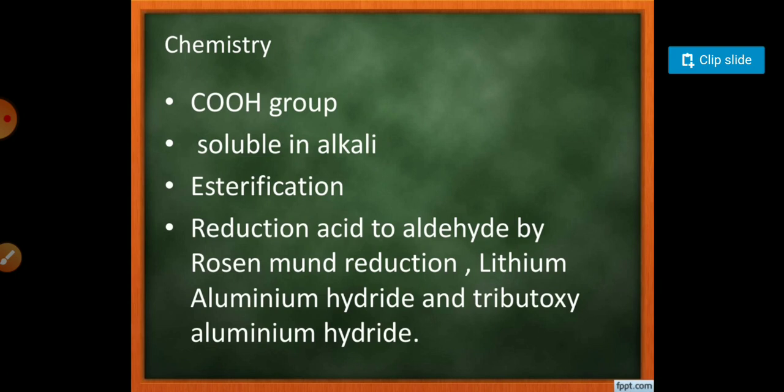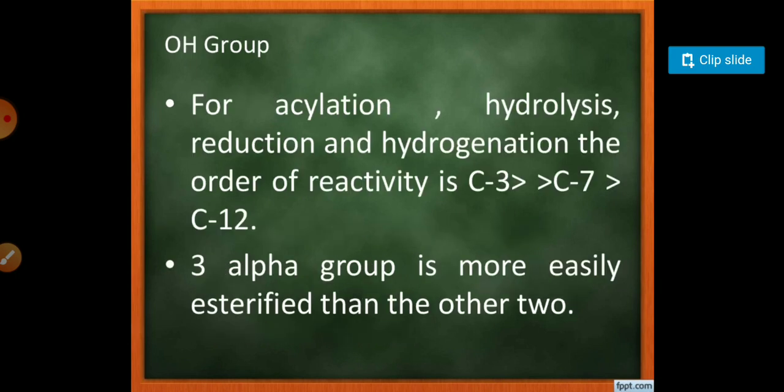The chemistry of bile acid includes a COOH group available in alkaline medium for esterification. Reduction to aldehyde occurs via Rosenmund reduction, lithium aluminum hydride, and tributyl aluminum hydride. The OH group undergoes acylation, hydrolysis, reduction, and hydrogenation. The reactivity of hydroxyl hydrogens is on C3, C7, and C12, with higher reactivity for the C3 position. The 3-alpha group is more easily esterified than the other two.